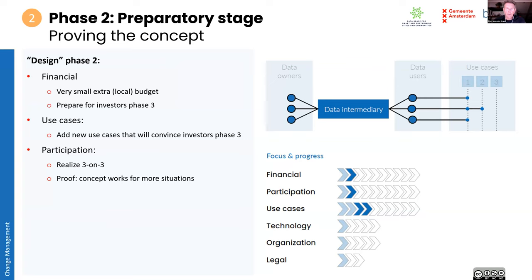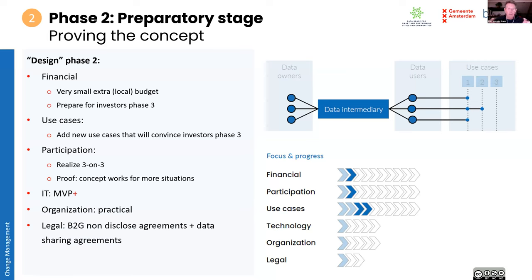In phase two, you implement the use case with all three networks connected to all three cities, and you start preparing phase three. Phase three is the big leap financially, because then you want to build the real data exchange and you need real money. So the first thing you do at the beginning of phase two is think about who is going to pay the investments for phase three, and what use cases will be interesting for the candidates who are going to finance this. From the technical part, you will add some things to the MVP but it won't be a big change. Organizationally, not a lot of things will be happening, and legally the documents will probably be the same, only signed by more parties.